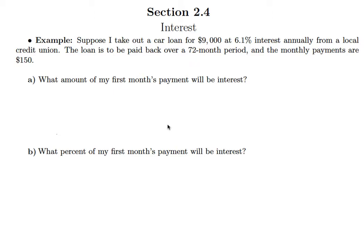In this example, we're going to investigate what happens when we make monthly payments on a loan. So the situation is that I take a car loan out for $9,000 at 6.1% interest annually from a local credit union. The loan is to be paid back over a 72-month period, and the monthly payments are $150.